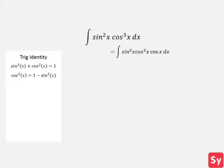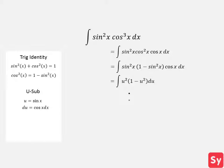Now that we've substituted 1 minus sine of x squared for cosine of x squared, we can go ahead and use u substitution, setting u equal to the trig function with a higher power, which is sine of x, and therefore du equals cosine of x dx. We substitute u and du back into the integrand, solve using the power rule, substitute sine of x back in, and get one-third times sine of x cubed minus one-fifth times sine of x to the fifth plus C as our answer.